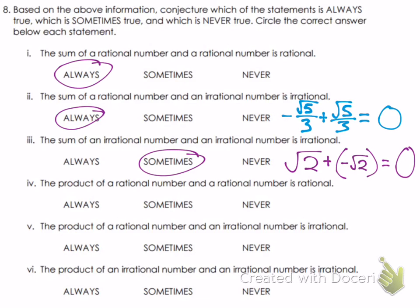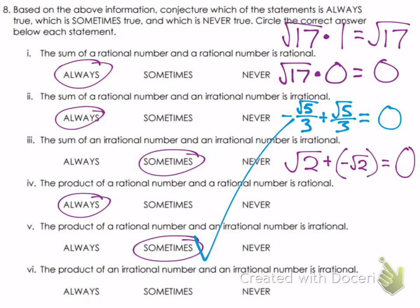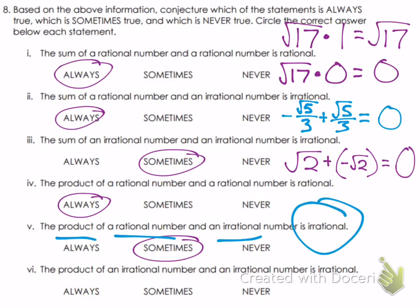The product of a rational times a rational is always rational. The product of a rational times an irrational is sometimes irrational. For example, √17 times 1 is still √17 — irrational. But √17 times 0 equals 0, which is rational. So it is sometimes true, not always, that multiplying a rational by an irrational gives an irrational result.